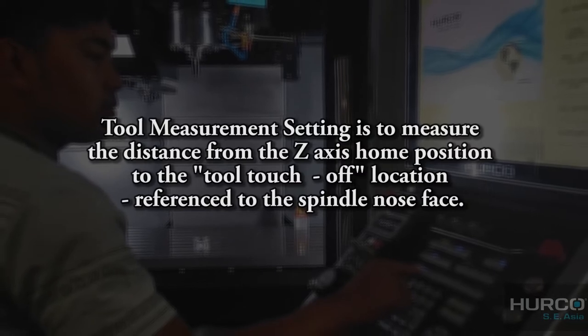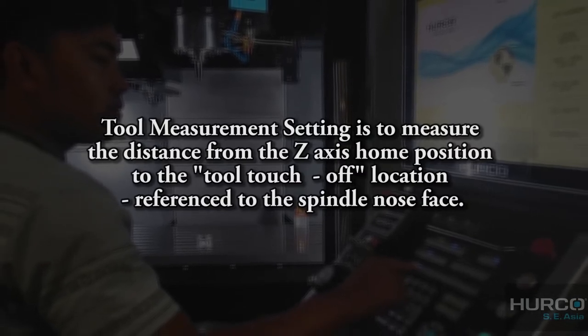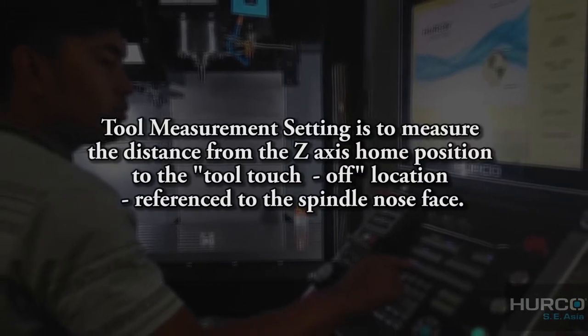What is Tool Measurement Setting? Tool Measurement Setting is to measure the distance from Z-axis home position to the tool touch-off location, referenced to the spindle nose face.